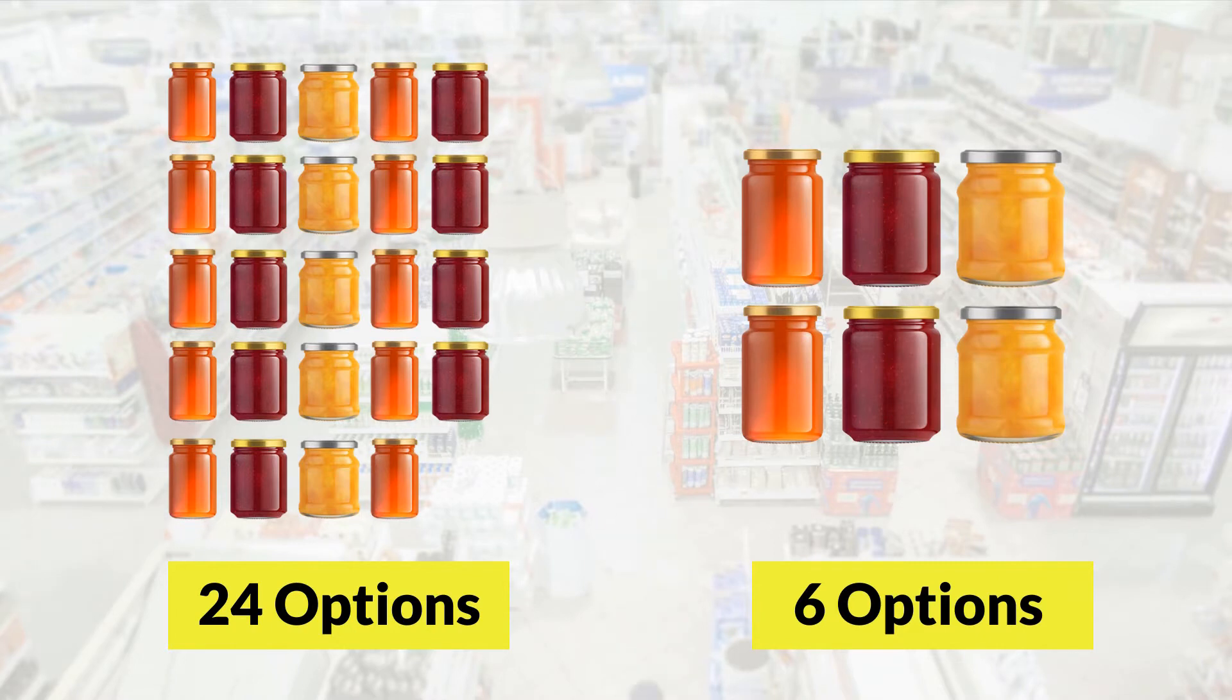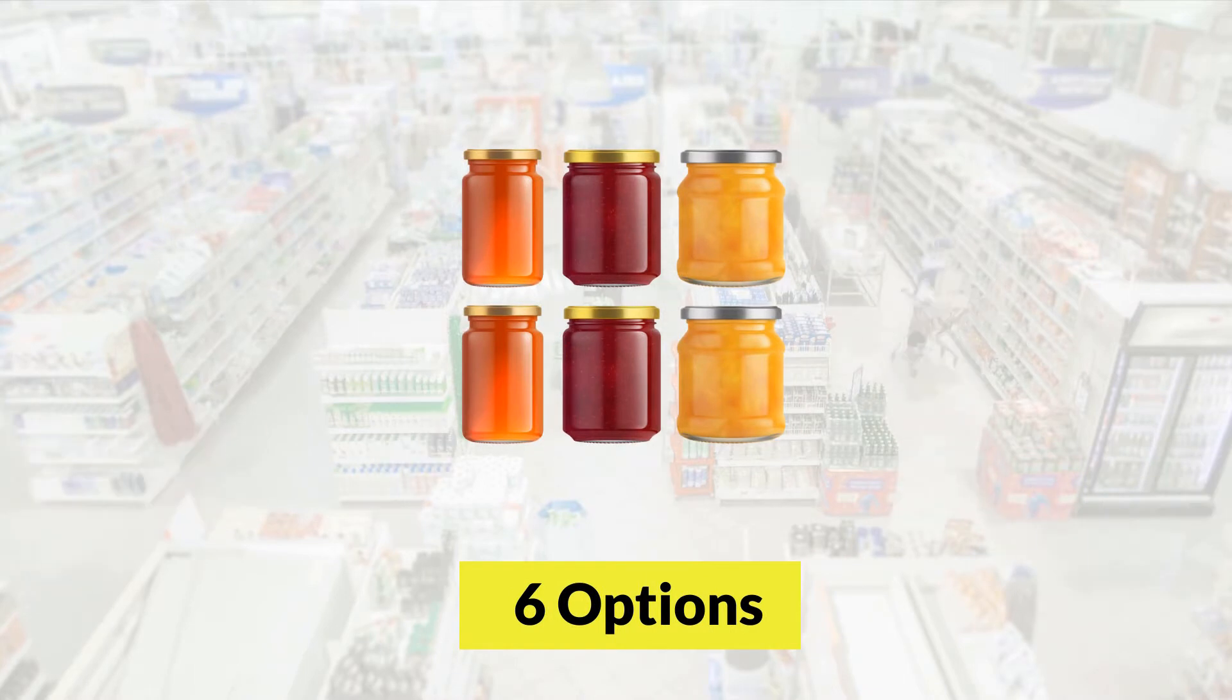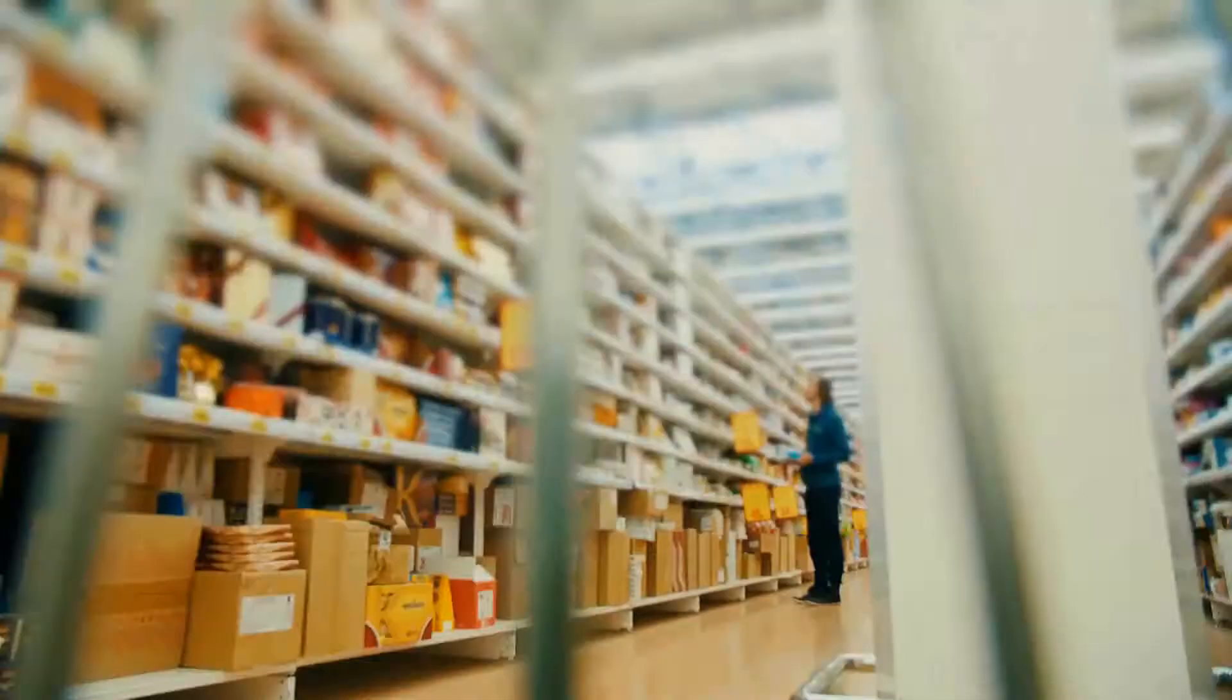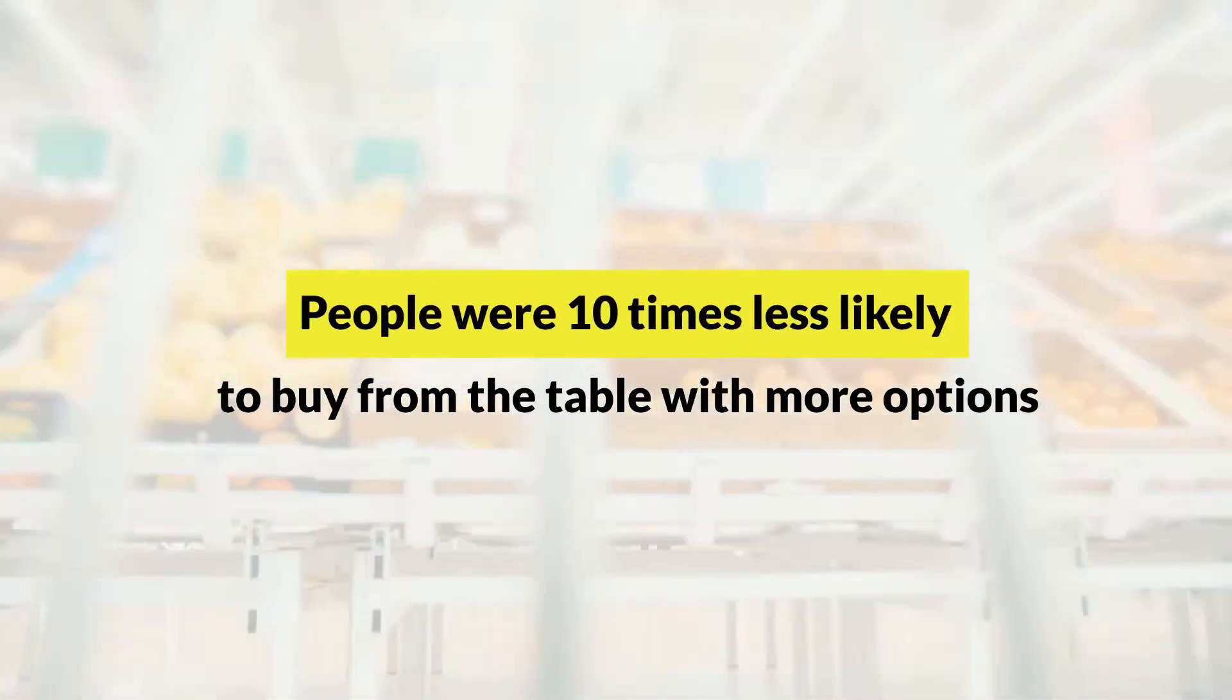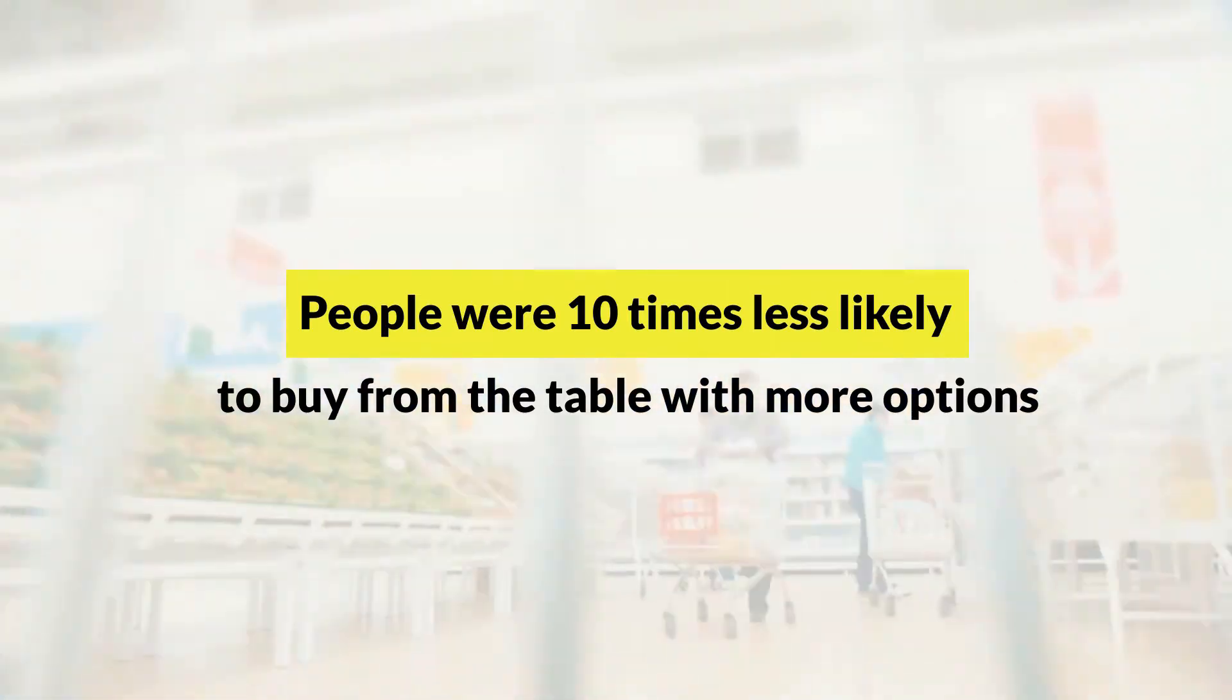Then on another day at the same food market, people were given only six different types of jam choices. Guess which display table led to more sales? Yes, it was the one with fewer options. According to their research, while the big display table with 24 jams generated more interest, people were far less likely to purchase a jar.